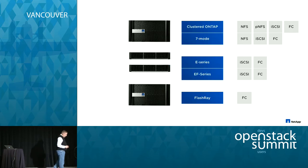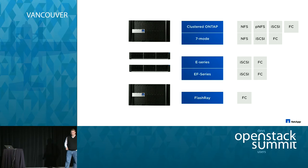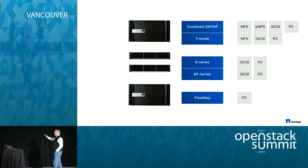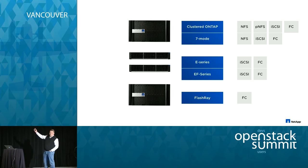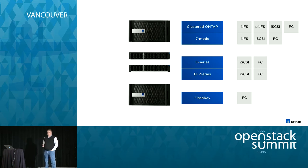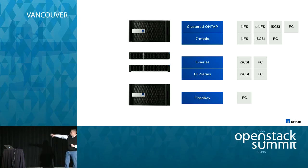Turning to Cinder: our strategy is to provide best-in-class integrations across our entire portfolio, whether ONTAP-based hardware systems or ONTAP in virtual form — including a derivation of our OS that runs in clouds, the first example of which runs in AWS. We also provide Cinder integrations for E-Series and EF-Series — the EF being an all-flash version — and there's another platform called FlashRay that we also have a prototype Cinder enablement for.